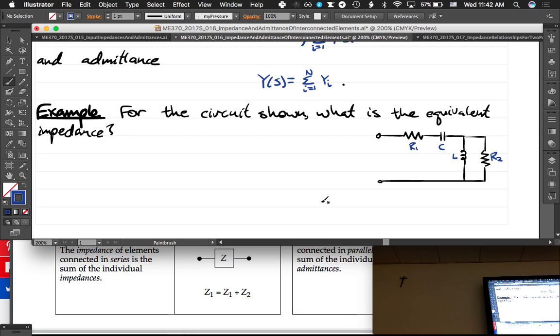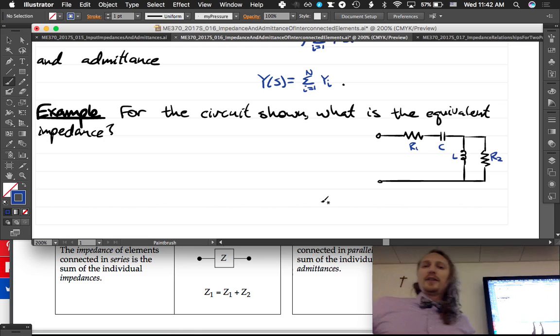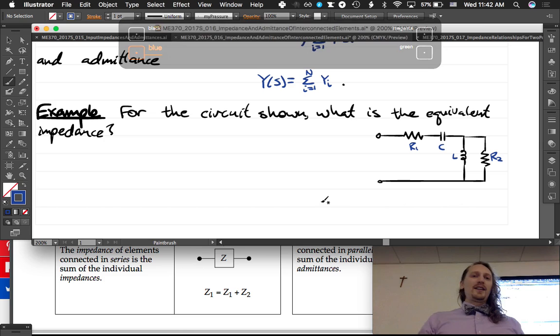I mean, if you want this example to be more than one line though, you've kind of got to simplify or something. We thought it looked so hard. So what is it? What is the equivalent impedance?